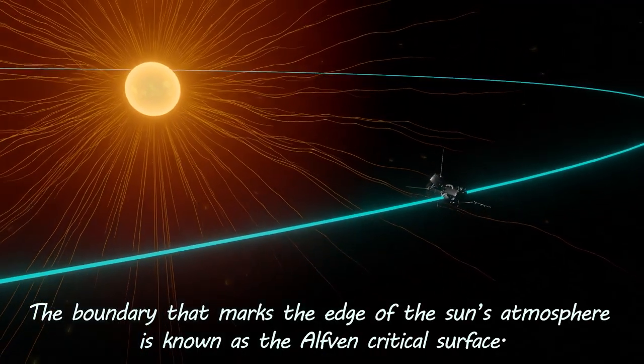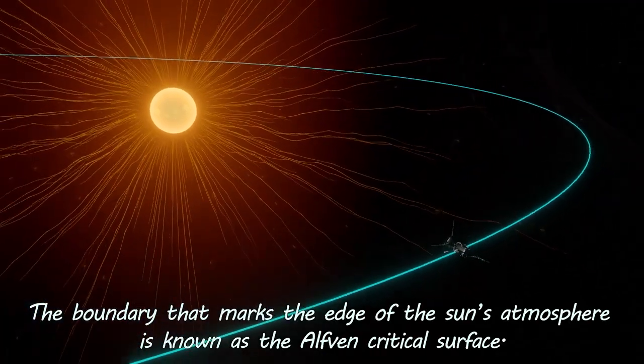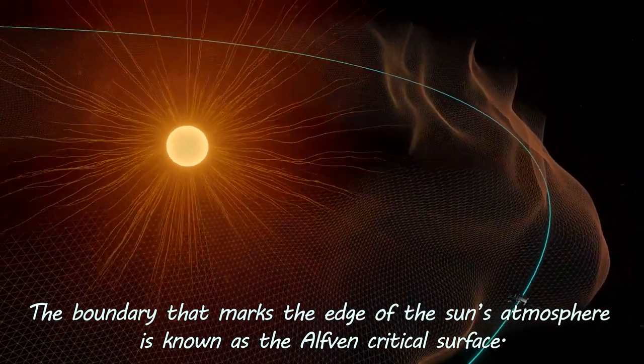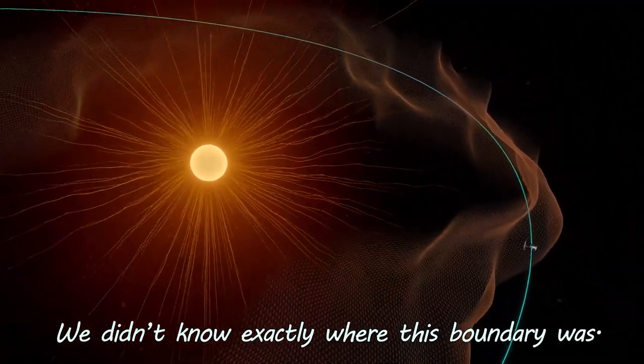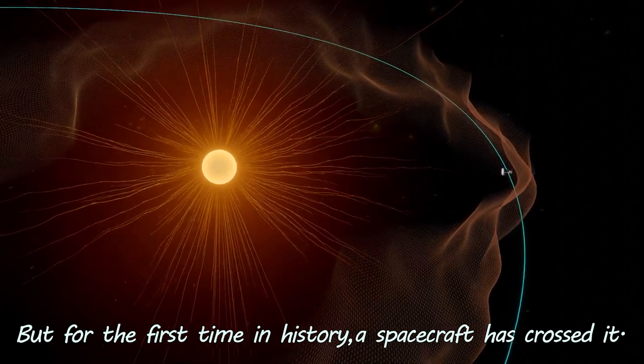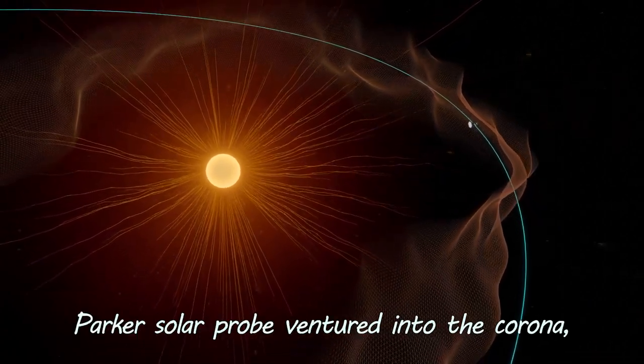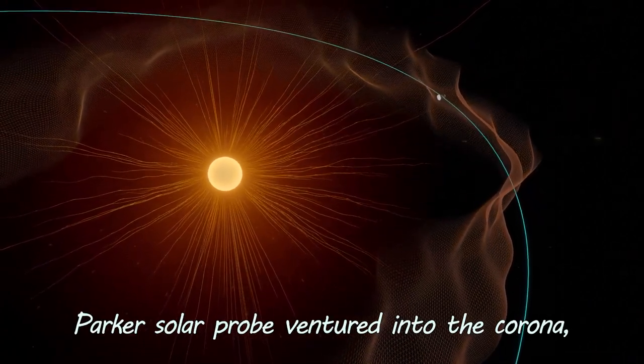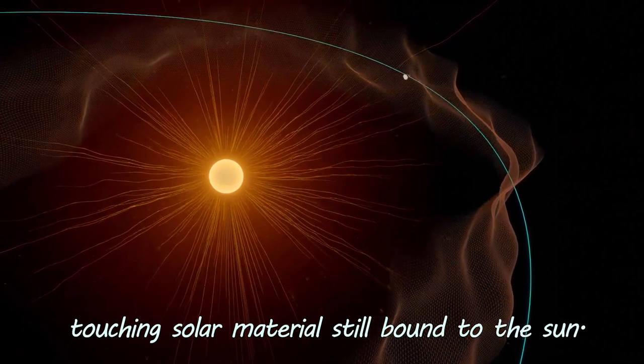The boundary that marks the edge of the Sun's atmosphere is known as the alpha-1 critical surface. We didn't know exactly where this boundary was, but for the first time in history, a spacecraft has crossed it. Parker Solar Probe ventured into the corona, touching solar materials still bound to the Sun.